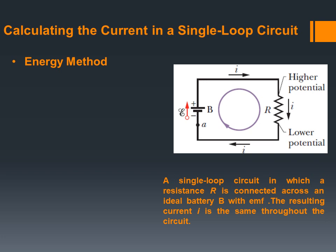The first way is the energy method. Here you see a battery B and the current flows from the positive terminal all the way to the resistor, comes down and then comes back to point A and back to the negative terminal of the battery. In a single loop circuit, a resistance R is connected across an ideal battery. We consider this battery to be ideal, meaning the internal resistance is zero. The resulting current I is the same throughout the circuit, and we assume the current I flowing through the whole circuit remains constant.